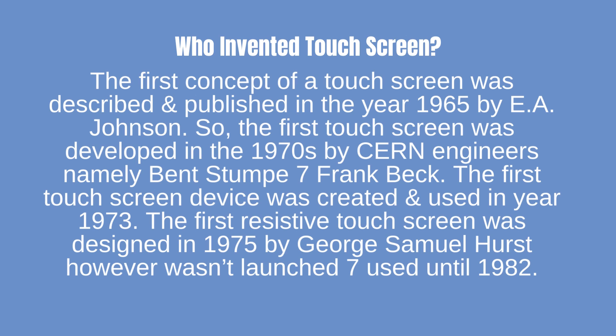Who invented the touchscreen? The first concept of a touchscreen was described and published in 1965 by E.A. Johnson. The first touchscreen was developed in the 1970s by CERN engineers, namely Ben Stump and Frank Beck. The first touchscreen device was created and used in 1973. The first resistive touchscreen was designed in 1975 by George Samuel Hurst, however it wasn't launched and used until 1982.